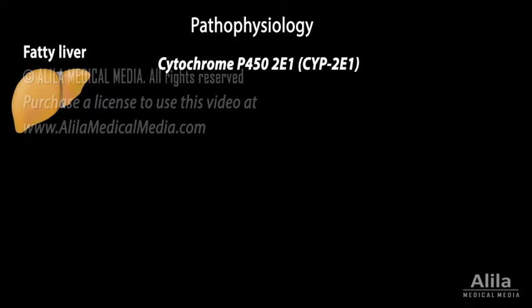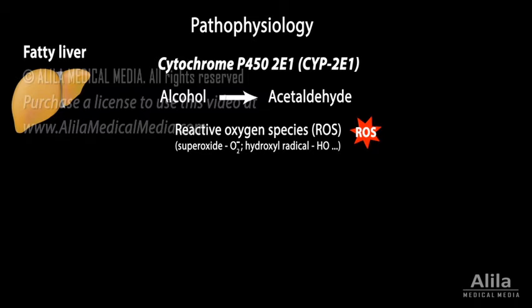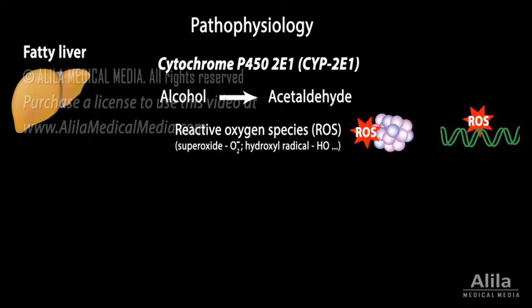Chronic alcohol use upregulates the CYP2E1 pathway. This pathway generates harmful reactive oxygen species, which can damage proteins and DNA. The effect is exaggerated in patients who are deficient in antioxidants due to malnutrition.